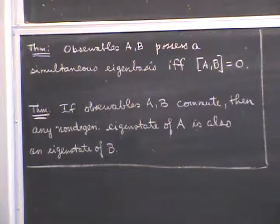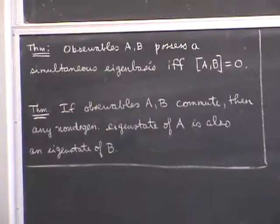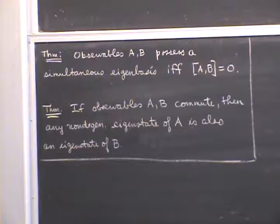I want to begin today by discussing these two theorems. The first one I was telling you about at the end of the hour last time. It says that if you have two observables — an observable is a complete Hermitian operator — if you have two observables A and B, they possess a simultaneous eigenbasis if and only if they commute.